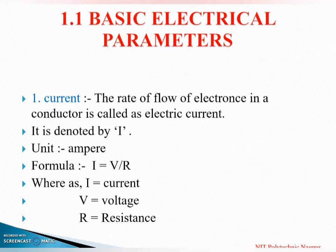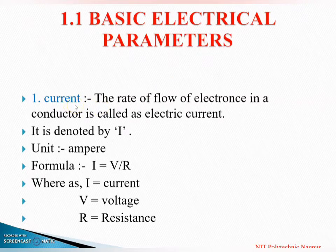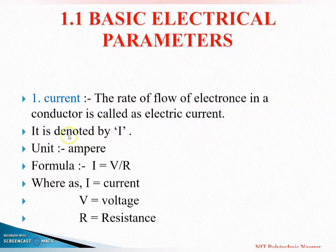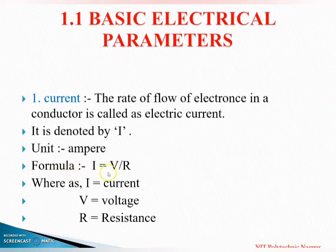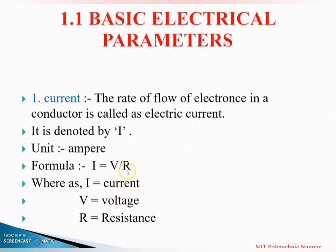First of all we discuss the definition of current. The rate of flow of electrons in a conductor is called as electric current. It is denoted by I, unit is ampere, and the formula of current is I = V / R, where I is for current, V for voltage, and R for resistance.